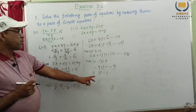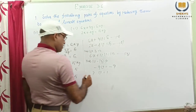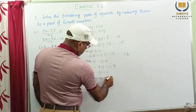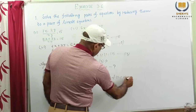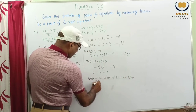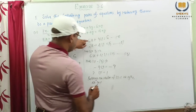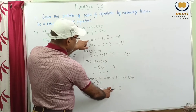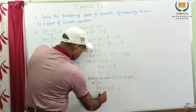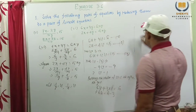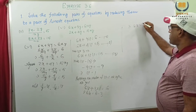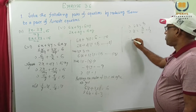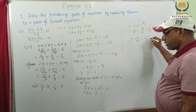So putting the value of v equal to 1 in equation 1, we get: 6u plus 3v equal to 6. So this is 3 into 1 — v means 1. So 6u equal to 6 minus 3. This implies 6u equal to 3, and u equal to 3 by 6, equal to 1 by 2. Therefore u equal to 1 by 2, v equal to 1.